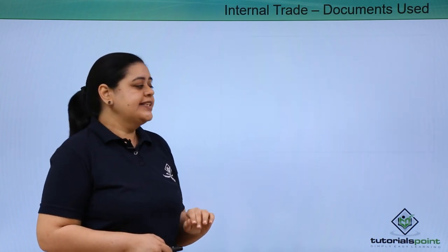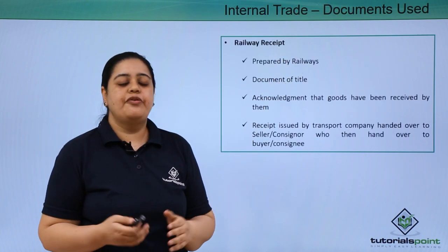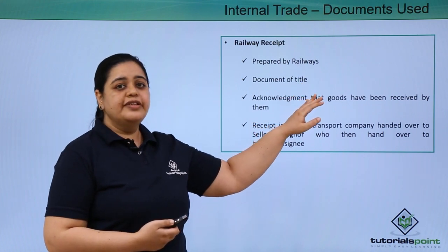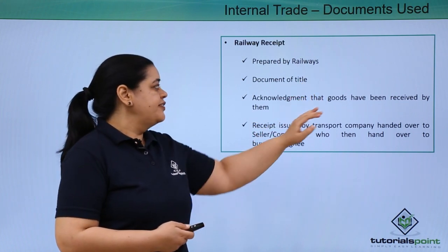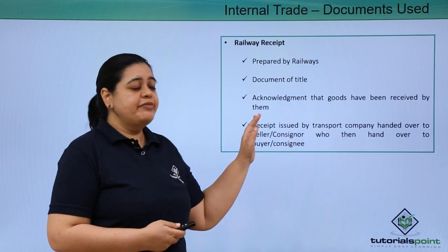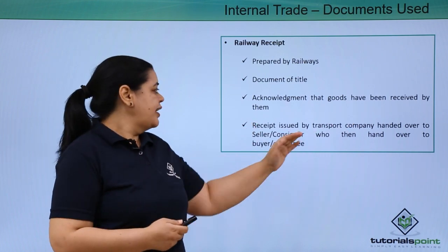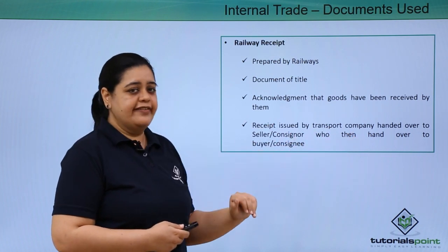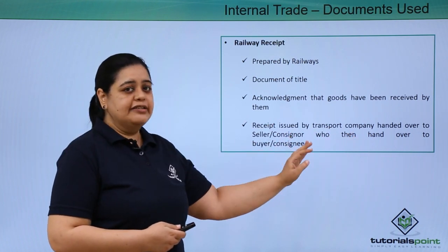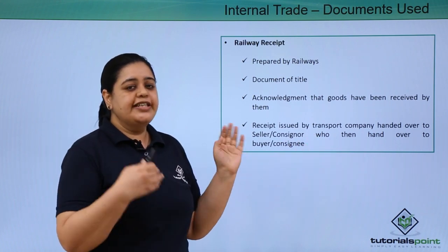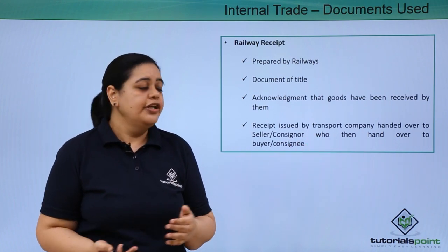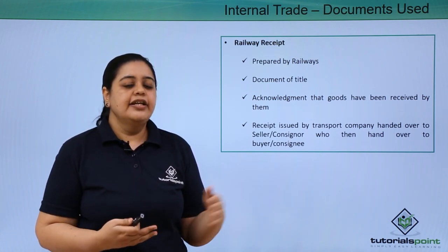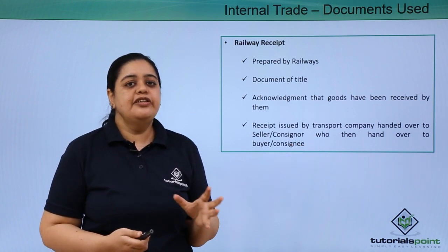The next document is the railway receipt. As the name suggests, this is prepared by the railways. It is a document of title which acknowledges that the goods have been received by the railways. Similar to the lorry receipt, it is issued by the transport company — the railways — and handed over to the seller or consignor, who then hands it over to the buyer or consignee. When delivery of the goods has to be taken, they must present this receipt.